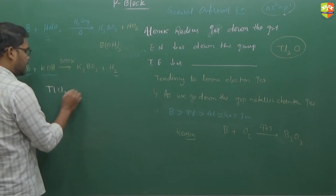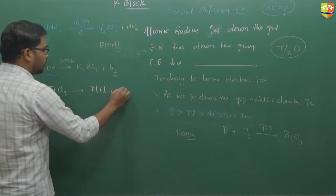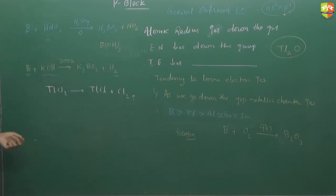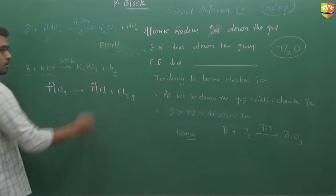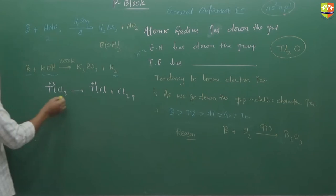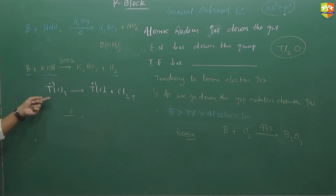TlCl3 has tendency to convert into TlCl by eliminating chlorine gas. Here we have plus 3 oxidation state and this is plus 1. Thallium and chlorine gas reaction at excess temperature, we will get this, but this is not stable, it converts into TlCl.